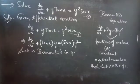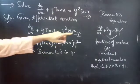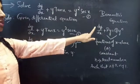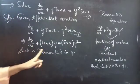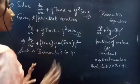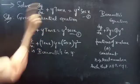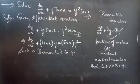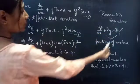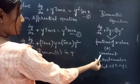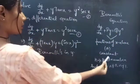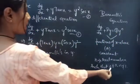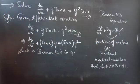We know that Bernoulli's equation in y is of the form dy/dx plus p times y equals q times y to the power n. Here p and q are either functions of x alone or constants, and n is a real number such that n is not equal to 0 and not equal to 1.